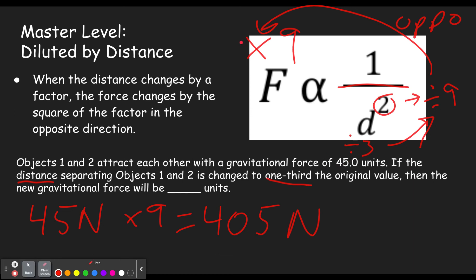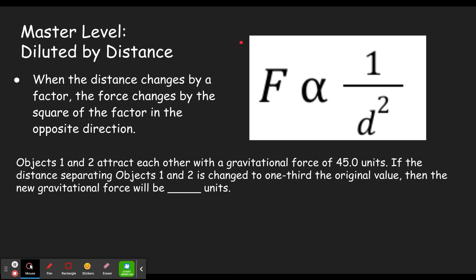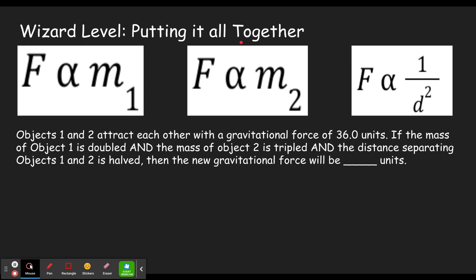All right, on to the wizard level where we get to combine our two abilities, putting it all together. So now we will have mass one changing, mass two changing, and the distance changing. Sometimes it'll just be two of them, sometimes it'll be all three. I picked one that has all three to make sure we step through the most complicated thing you'll get. So objects one and two attract each other with a gravitational force of 36 newtons. If the mass of object one is doubled, so mass one is doubled, so that's times two. Well these are linear relationships so this one's going to be times two. Okay, so now we're at 72 newtons.